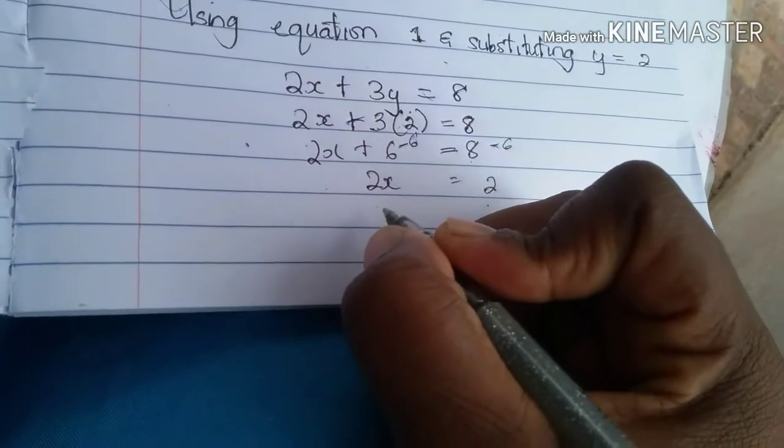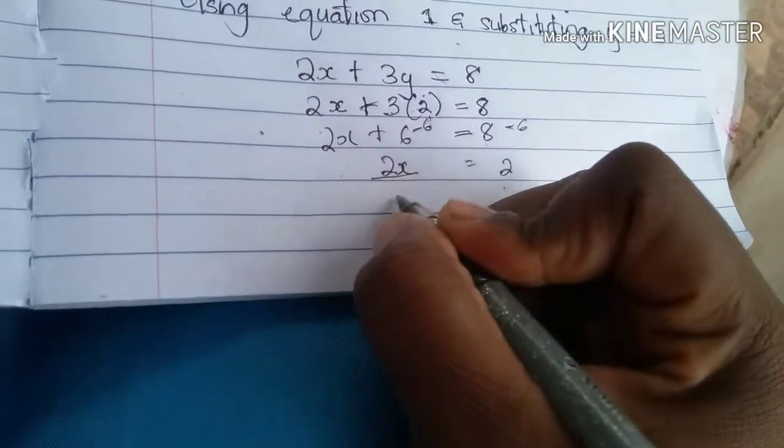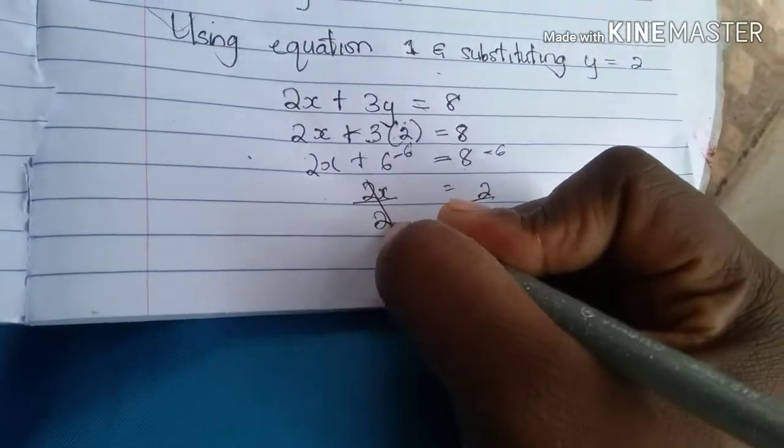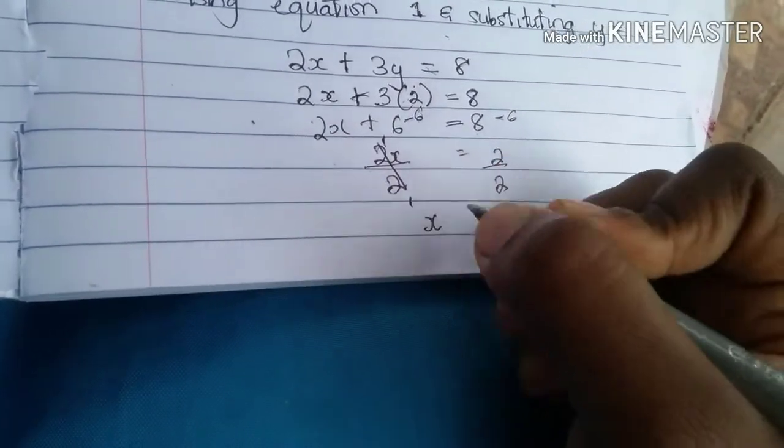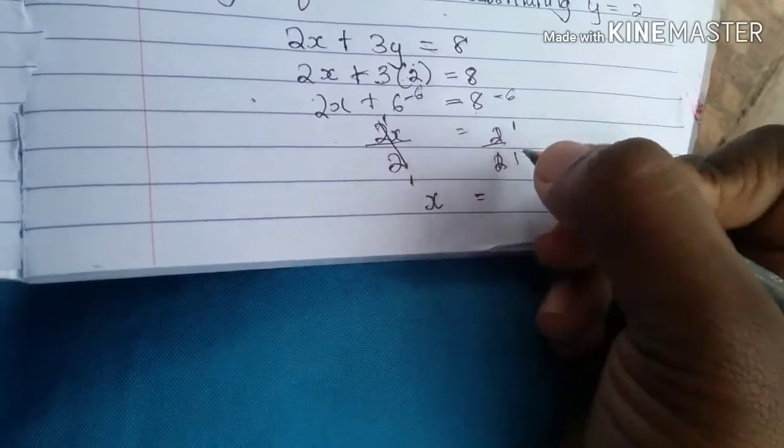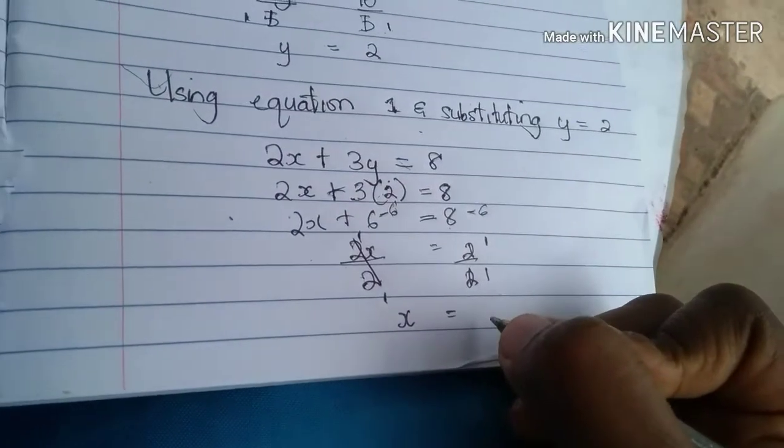We know that 2x is equal to 2, want to know 1x. We are going to divide both sides of the equation by 2. 2 into 2, 1. We are left with 1x or x. And 2 into 2, 1. 1 over 1 is the same as 1.